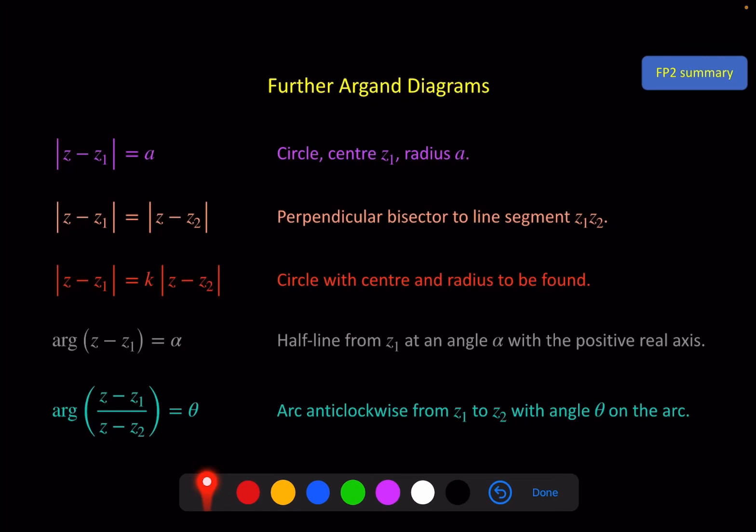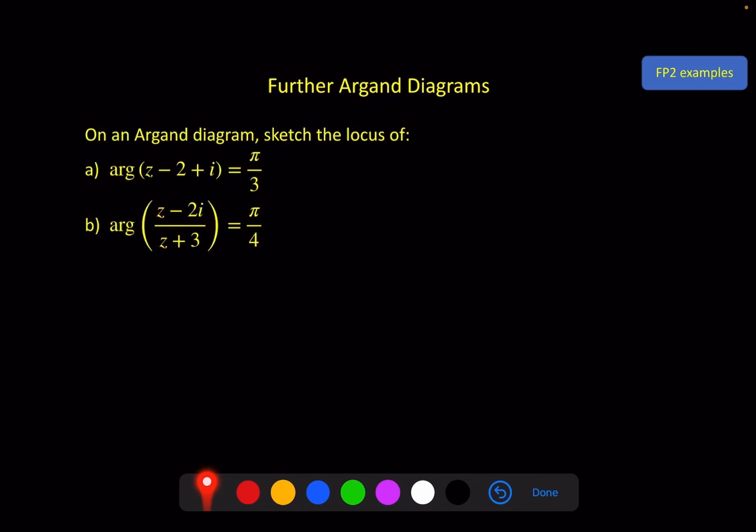Final two examples, one for this and one for this using that same process. On an Argand diagram, sketch the locus of each of these. And I'll also find the Cartesian equations. So for part a, we've got a half line. It is coming from 2 minus i. And usually I would do this, but in this case I need to be careful to have an open circle.